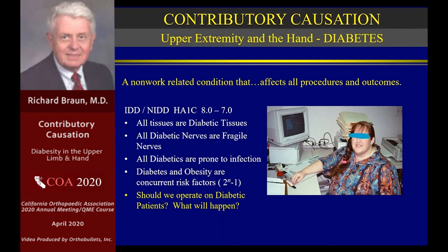Diabetic nerves go down sooner, stay down longer, and don't come up nearly as well when you do something that would perfectly improve a normal patient. All diabetics are prone to infection. A scary paper from the Mayo Clinic described injecting cortisone to reduce perioperative inflammation — their statistics showed an 8% infection rate in carpal tunnel cases, which is unheard of since carpal tunnel surgery is usually free of infection. So diabetic patients should go nowhere near cortisone.